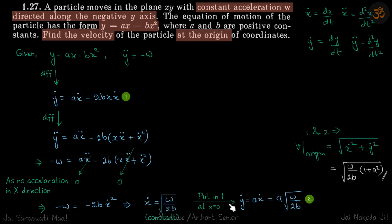Now we have x dot, we have y dot, so we just do the vector sum and we'll get our velocity at origin, which is our answer.